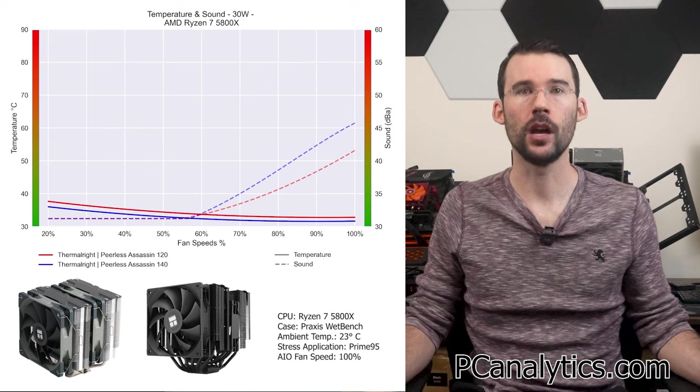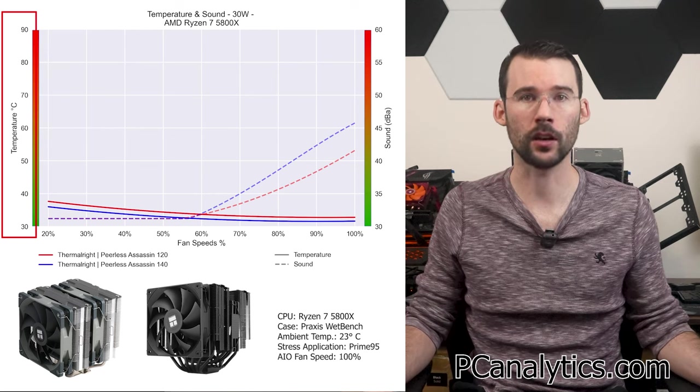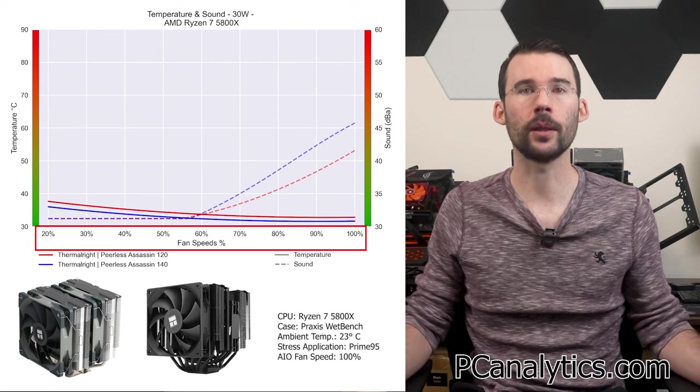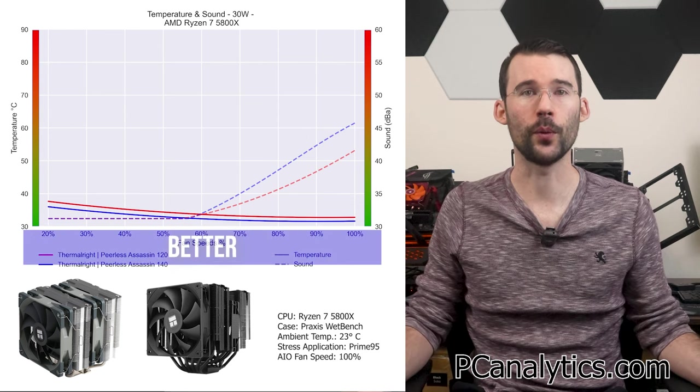In our first set of charts normalized by percent speeds, we have temperatures on the left represented by the solid line, noise on the right represented by the dash line, and percent speeds on the bottom. For this graph, lower is always better.